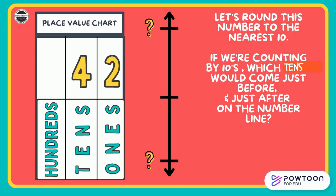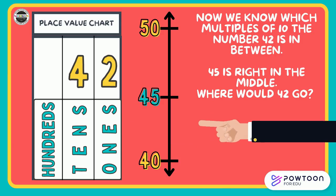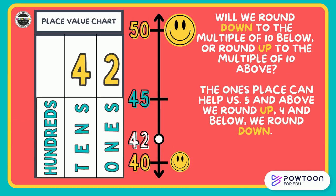Let's round this number to the nearest 10. If we're counting by tens, which 10 would come just before and just after on the number line? Pause the video and discuss this with your partner. Now we know which multiples of 10 the number 42 is in between. 40 is down below and 50 is up above on the number line. 45 is right in the middle. Where would 42 go? Point it out on the number line. Will we round down to the multiple of 10 below or round up to the multiple of 10 above? The ones place can help us — 5 and above, we round up; 4 and below, we round down. If we look at 42, we see a 2 in the ones place. The 2 tells us 4 and below, we round down. So we know that 42 rounded to the nearest 10 is 40.